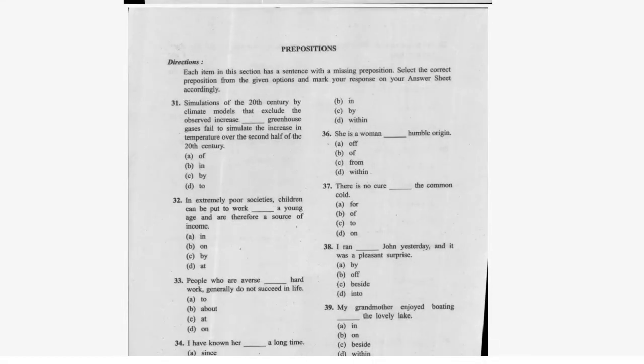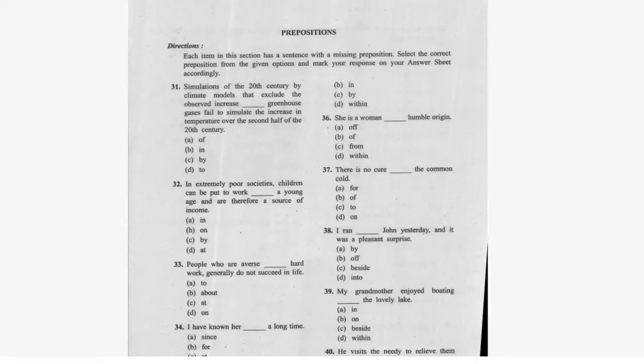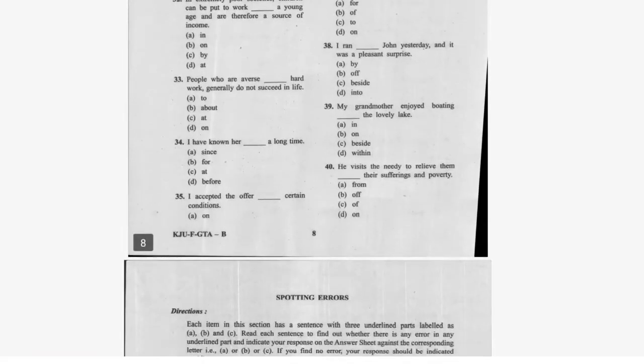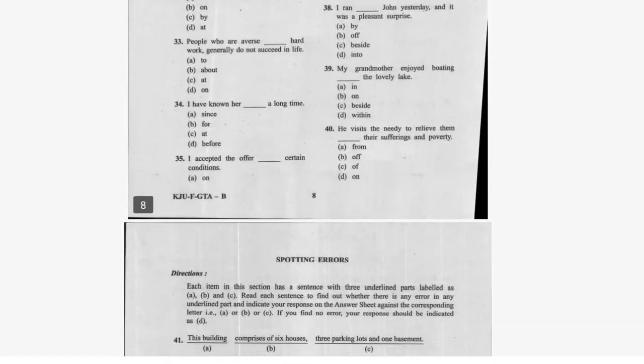Now moving to prepositions. Question 32: 'Some units of the 20th century by climate models that exclude the observed increase in greenhouse gases' — option B is correct, using 'in'. Question 33: 'In extremely poor society, children can be put to work at a young stage' — option D, using 'at'. Question: 'People who are averse to' — option uses 'to'. Question 33: option A: 'I have known her for a long time' — uses 'for'.